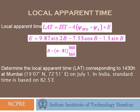Problem: Determine the local apparent time corresponding to 14:30 hours (IST) at Mumbai on July 1st. For July 1st, N = 182, which gives B ≈ 99.89 degrees, and E ≈ −3.5 minutes. Using ψ_STD = 82.5 and ψ_L = 72°51' = 72.85 degrees (converting minutes to decimal), substituting into the local apparent time formula gives the adjustment in minutes to subtract from IST.